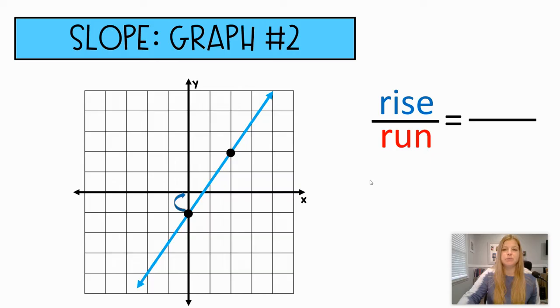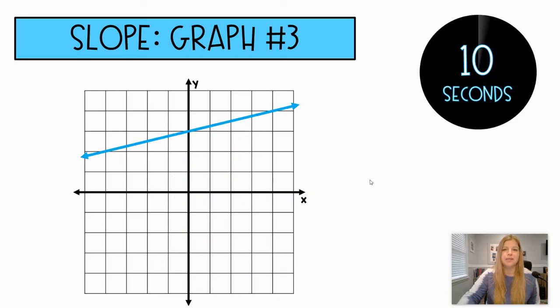Okay, so here I chose these two points. I rise three, run two, or my slope is simply three over two. Next one.